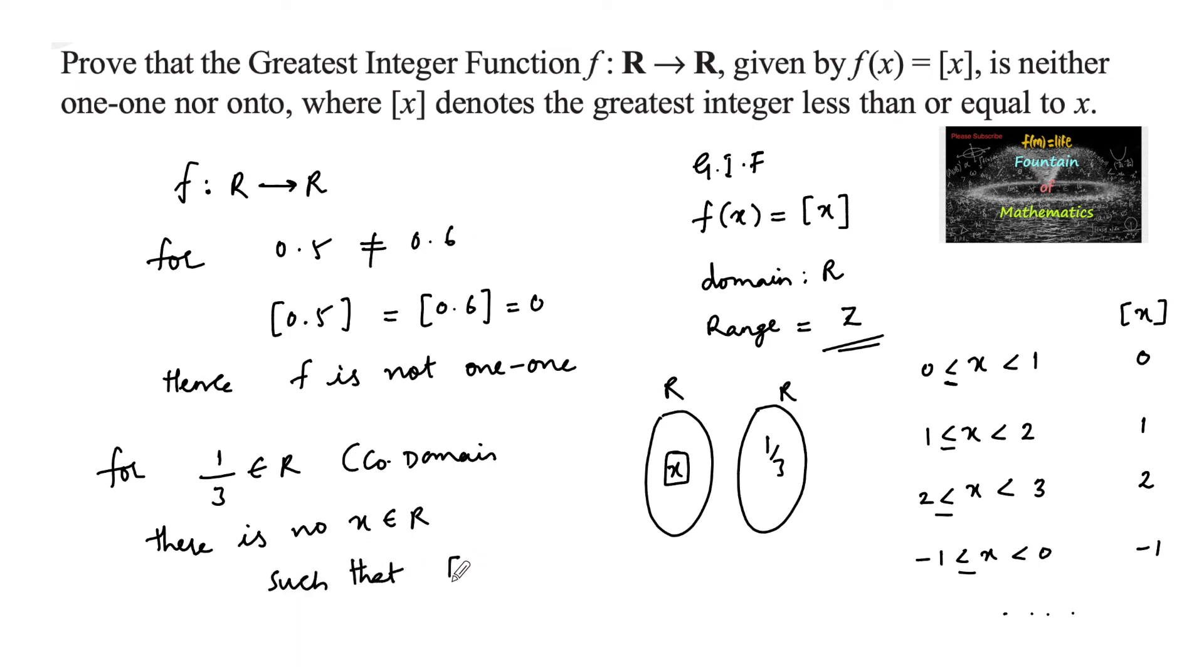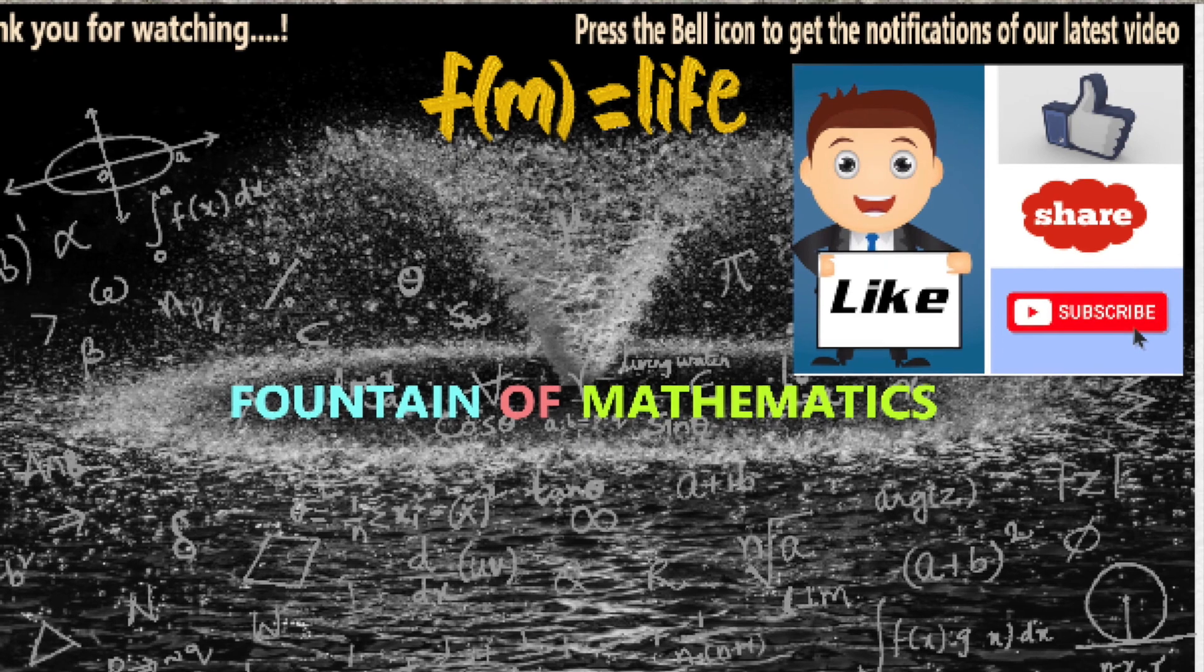[x] = 1/3. This does not exist, and hence we can say for 1/3 there is no preimage. Therefore, f is not onto. We can conclude that this function is neither one-to-one nor onto.